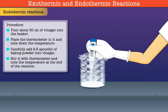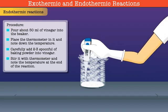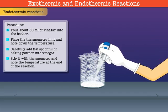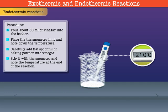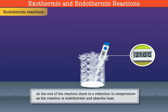Stir the solution and note the temperature at the end of the reaction. During this reaction, heat is absorbed and the temperature reduces. Therefore, the reaction of baking powder with vinegar is an endothermic reaction.